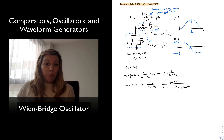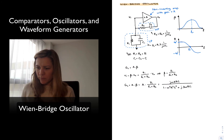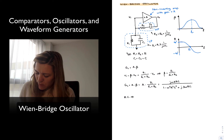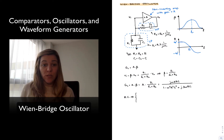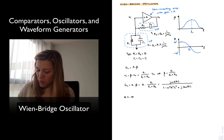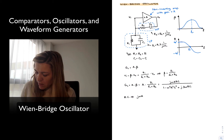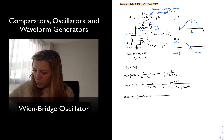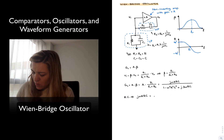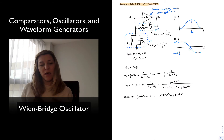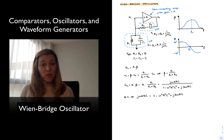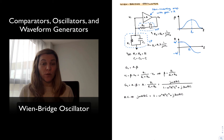So this is my transfer function for the loop gain. Applying the Barkhausen criterion, I need the magnitude of this to be equal to 1. For this to be equal to 1, essentially the numerator must equal the denominator, so jωA·RC equals (1 minus ω²R²C²) plus j3ωRC. I have a complex expression on both sides, and for the magnitude to equal 1 and the phase shift to equal 0, the real part must equal 1 and the imaginary part must equal 0.